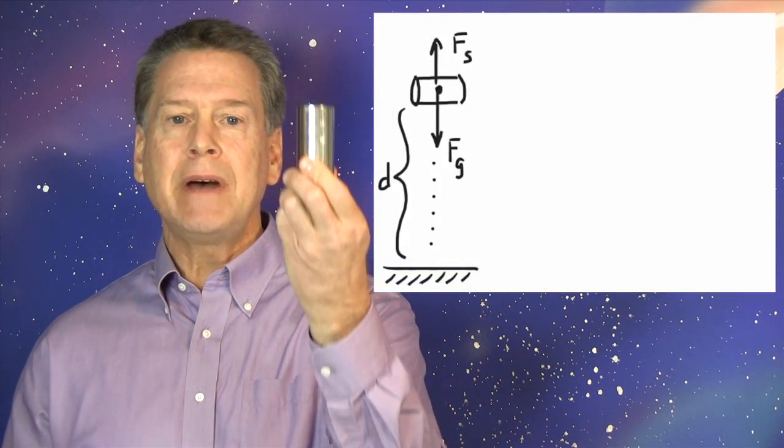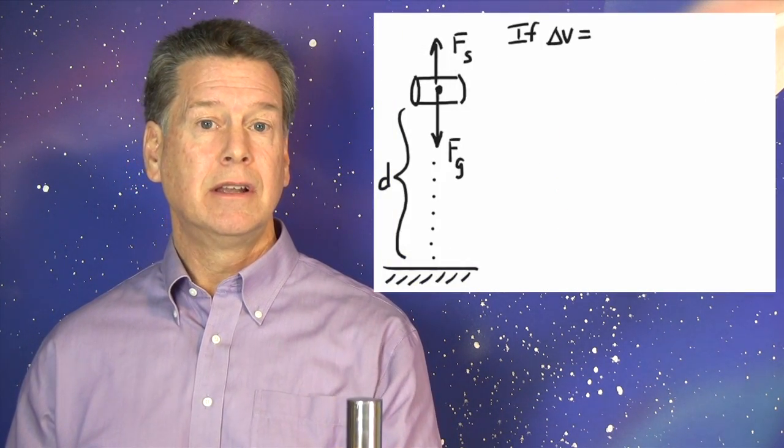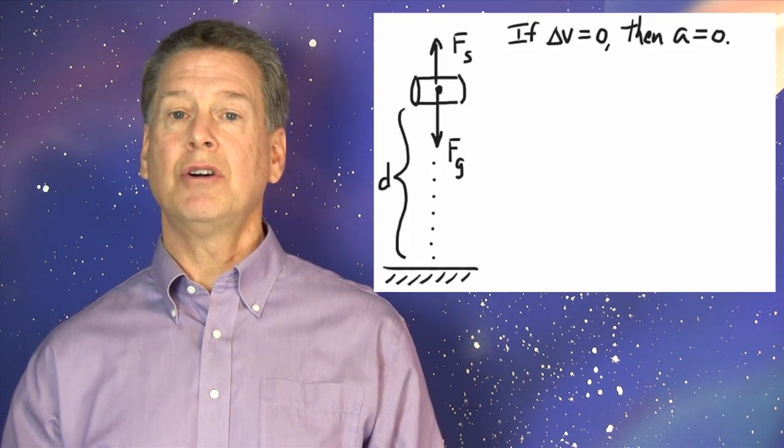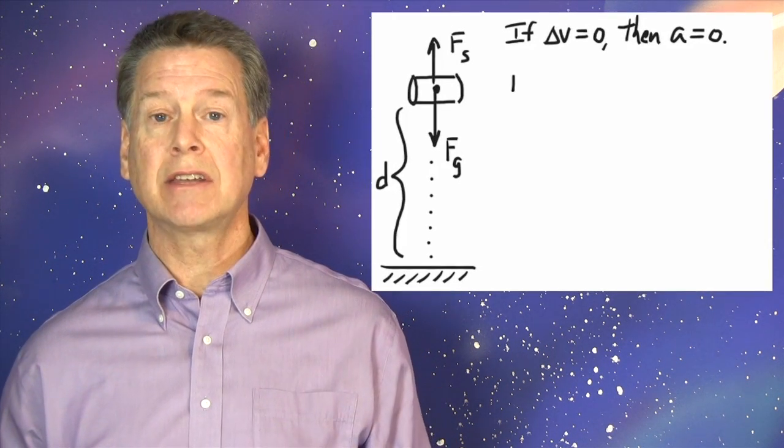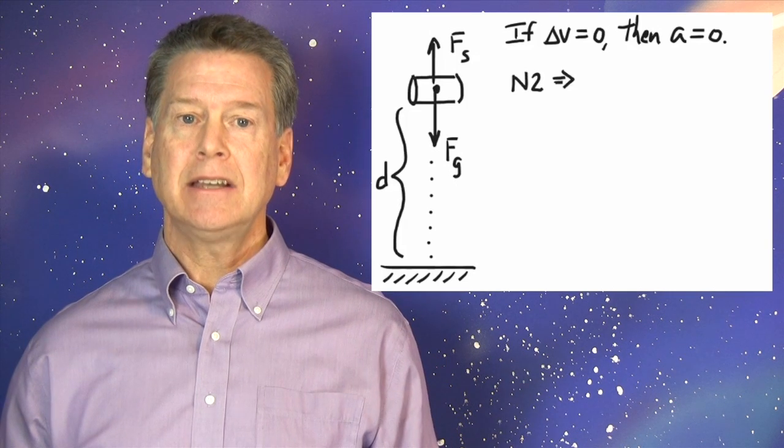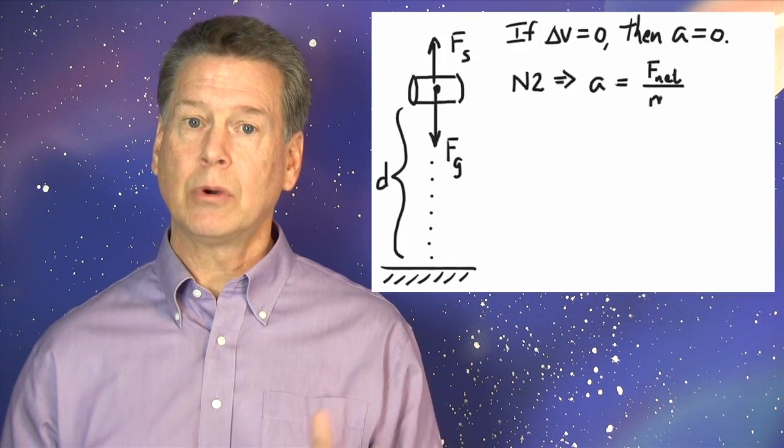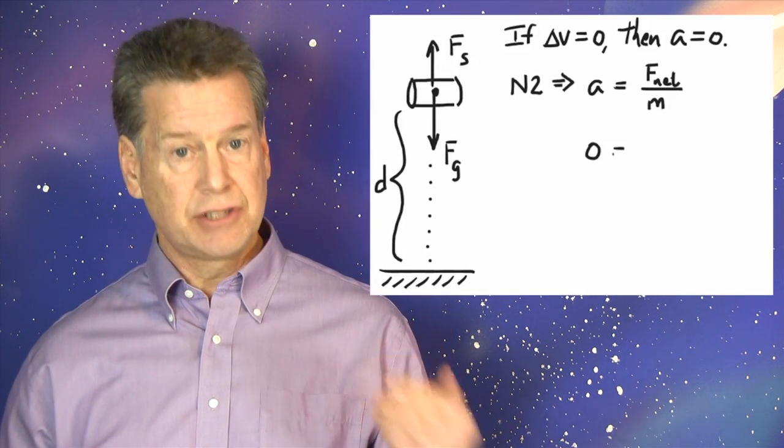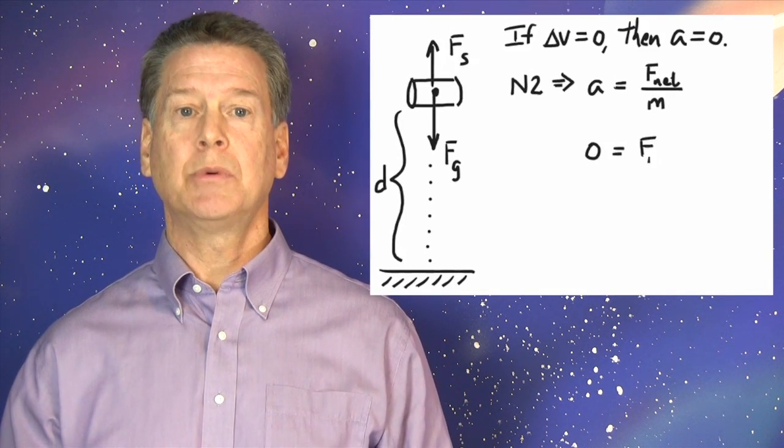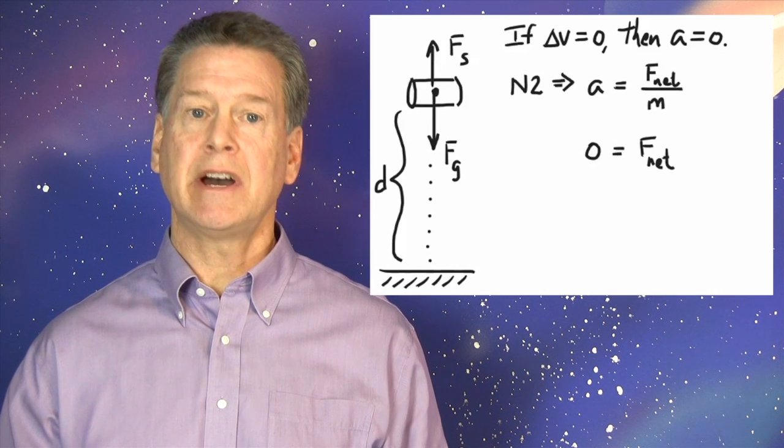If I lower the mass at constant speed, then there's no acceleration, and so, by N2, Newton's second law, A equals F sub net divided by M, the net force divided by the mass. That is, zero, no acceleration, equals F sub net divided by M.